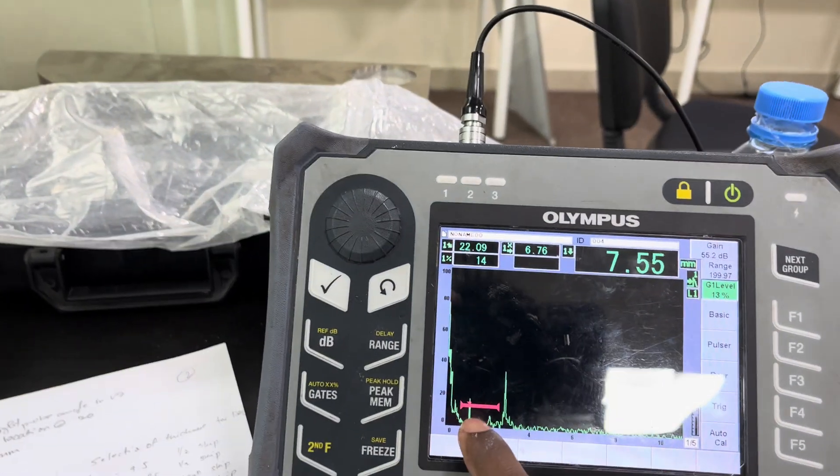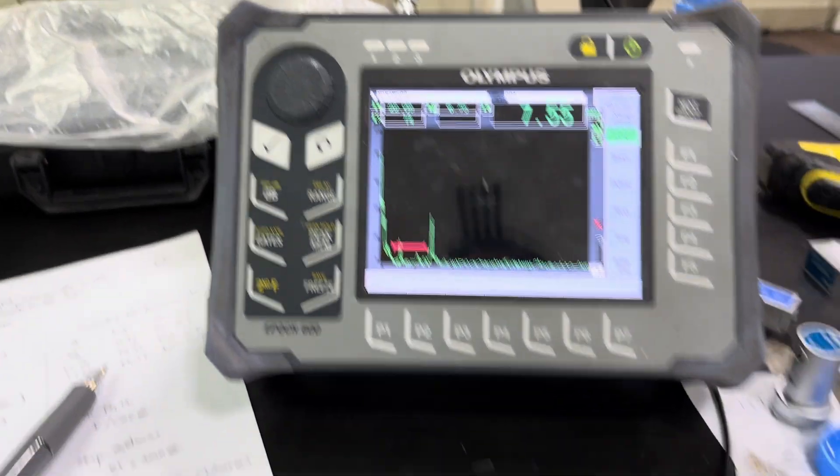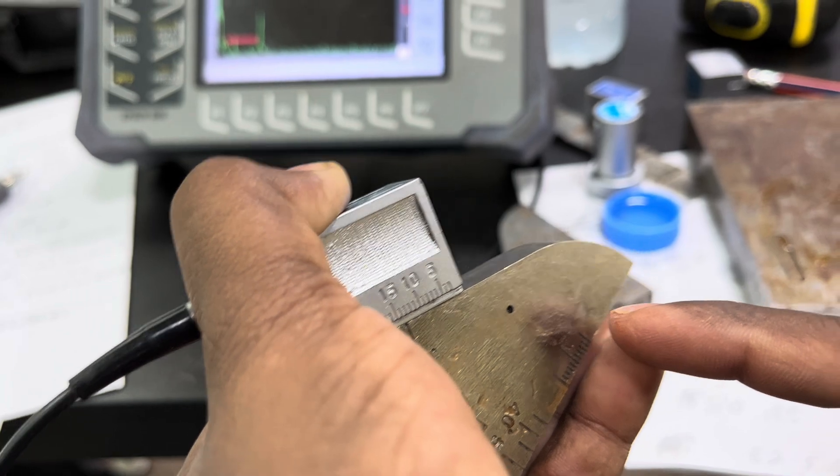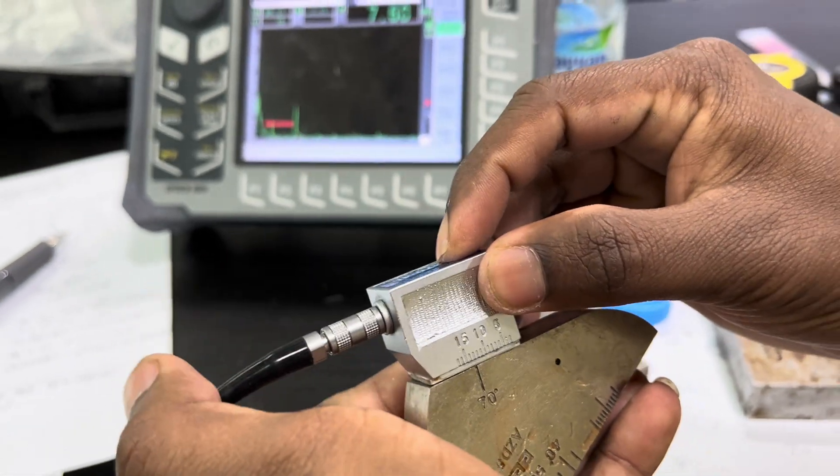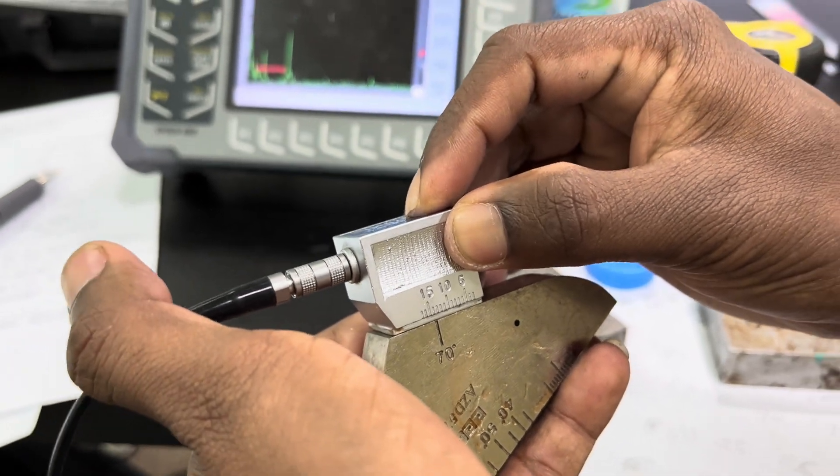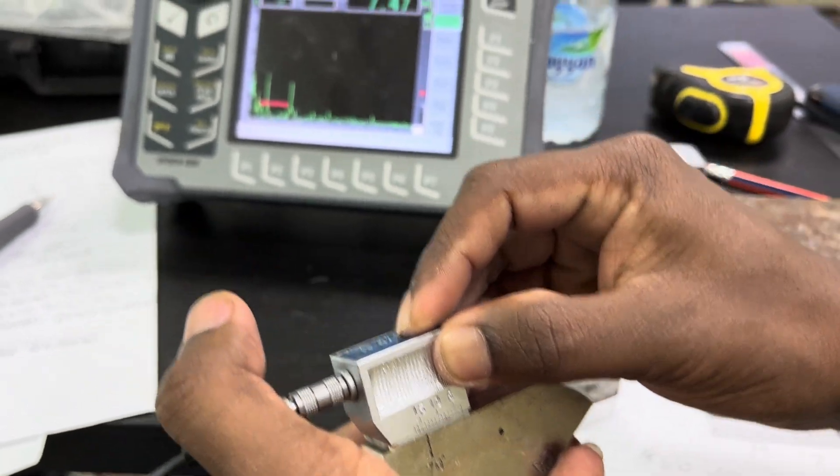This is the defect echo. It shows 7.5mm. Now the probe sensitivity is also good. The angle beam calibration is finished.